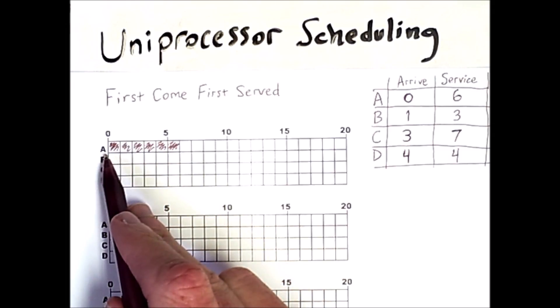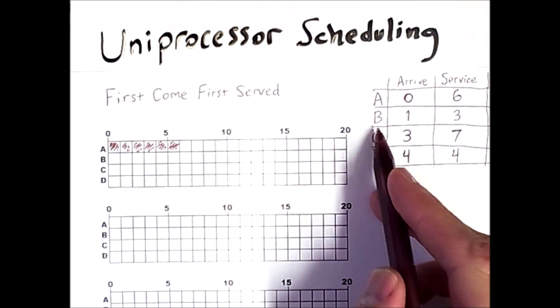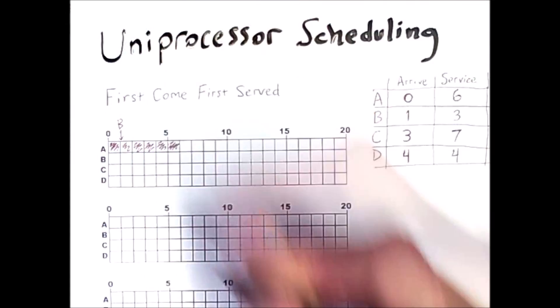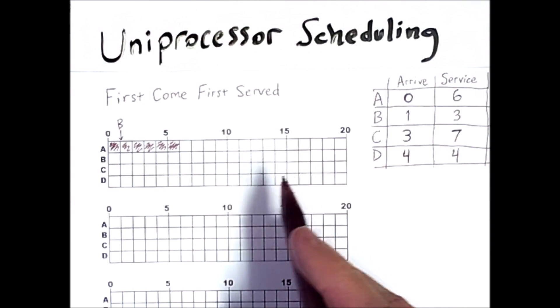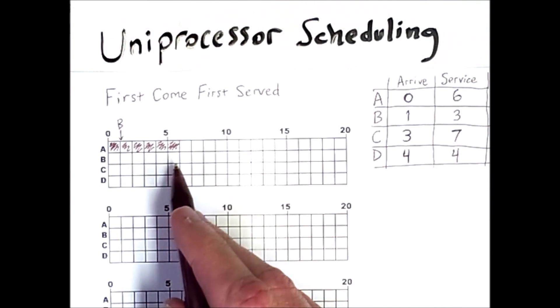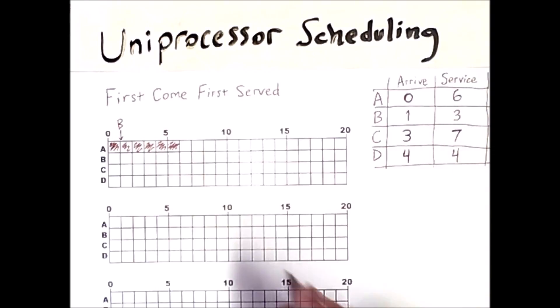Now while process A was executing, process B arrived at time one but because we're doing first come first serve, A has to finish, but once A does finish B can start immediately and run for three time steps.